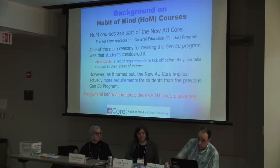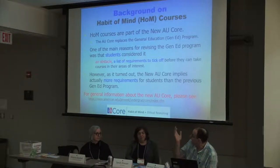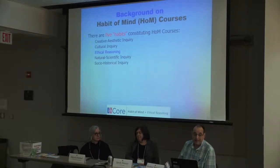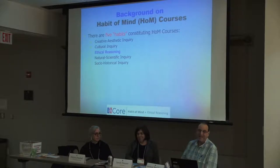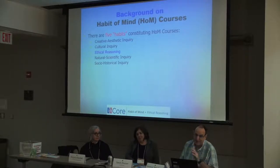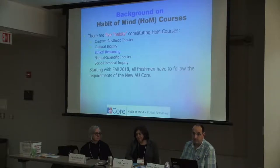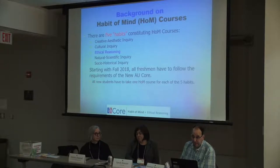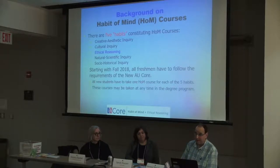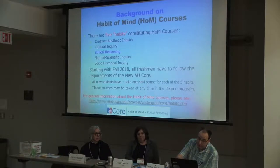For more general information about the AU core, there's a website you can look at. There are five Habits of Mind: creative and aesthetic inquiry, cultural inquiry, ethical reasoning, natural scientific inquiry, and socio-historic inquiry. Starting with Fall 2018, all freshmen have to follow the requirements of the new AU core, and all new students have to take one course for each of these five Habits of Mind. These courses may be taken at any time during the degree program.